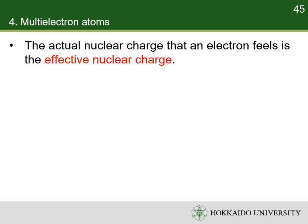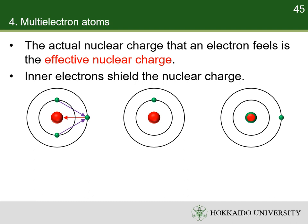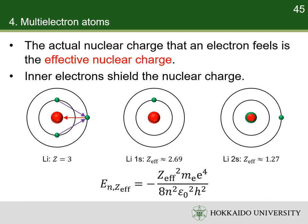In a multi-electron atom, the actual amount of nuclear charge experienced by an electron is the effective nuclear charge. The term 'effective' is used because the shielding effect of negatively charged inner electrons prevents outer electrons from experiencing the full nuclear charge of the nucleus. The electrons closest to the nucleus will see nearly all the nuclear charge, but electrons further away feel less nuclear charge. For instance, the lithium nucleus contains three protons. The electron in the 1s orbital, closest to the nucleus, sees an effective atomic number of 2.69. The electrons in the 2s orbital, further from the nucleus, feel an effective atomic number of only 1.27 because of the screening by the two inner electrons. Thus, the energy of an orbital depends on the effective nuclear charge felt by the electron and the principal quantum number.